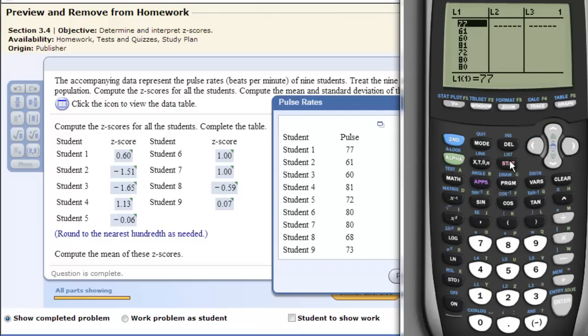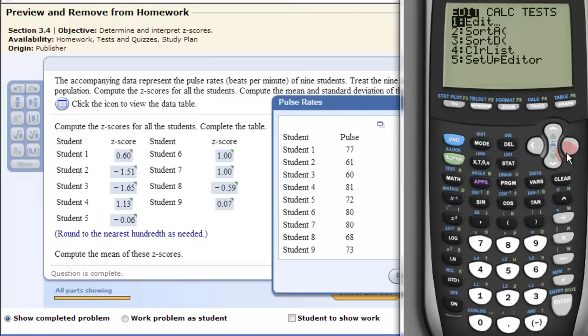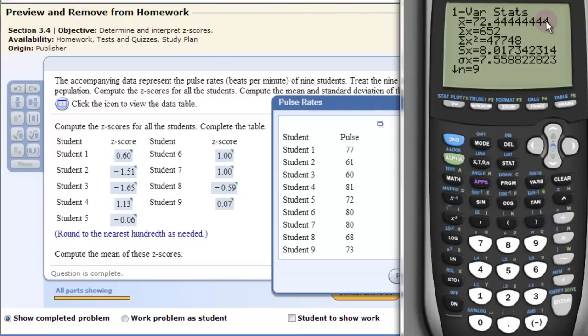Once we have the data entered, click stat and calculate. Then we want one-var stats because that will calculate the mean, 72.4444, and the population standard deviation, which is 7.58822823. Those are the two pieces of information we're going to use.